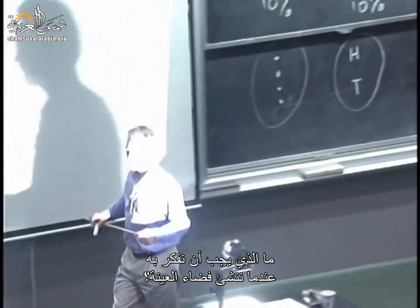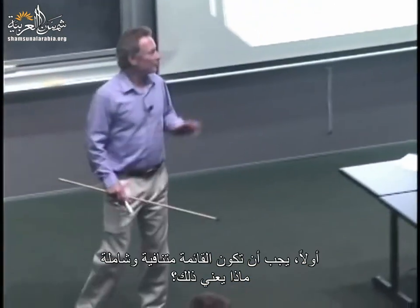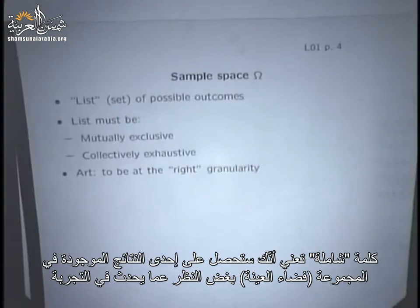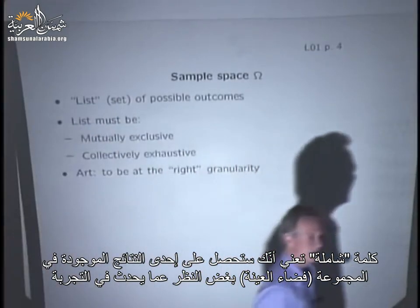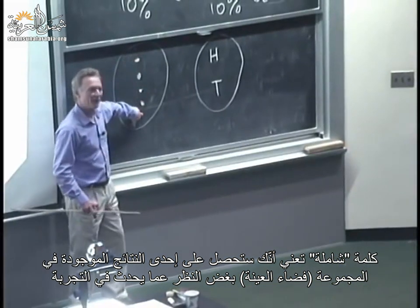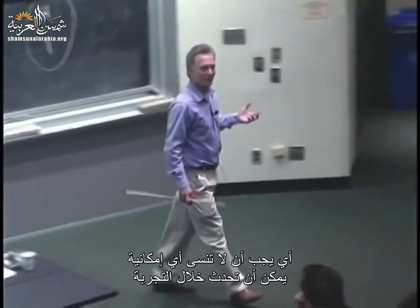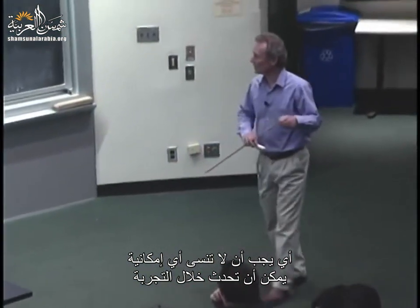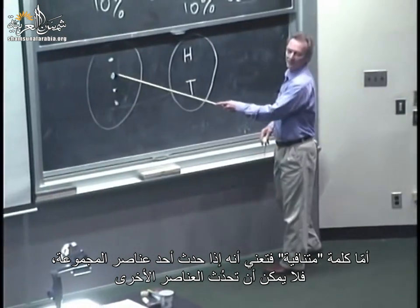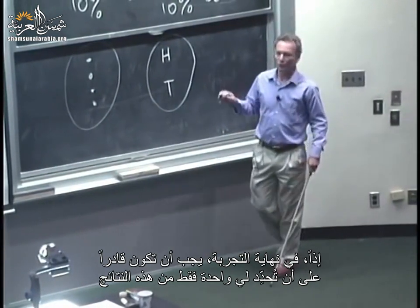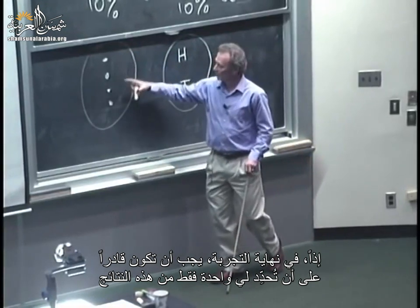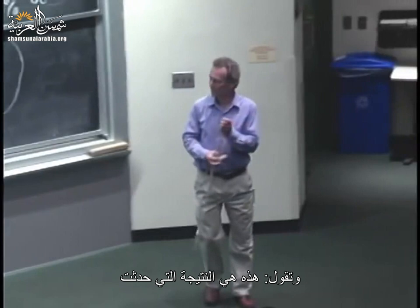When setting up a sample space, the list should be mutually exclusive and collectively exhaustive. Collectively exhaustive means that no matter what happens in the experiment, you're going to get one of the outcomes in there — you haven't forgotten any possibility. Mutually exclusive means that if one outcome happens, the others cannot. At the end of the experiment, you should be able to point to exactly one outcome and say 'this is what happened.'